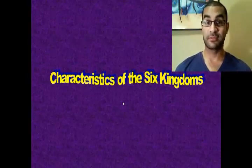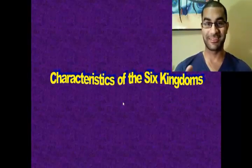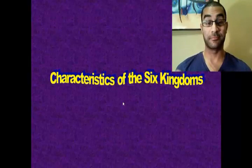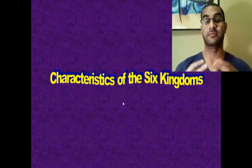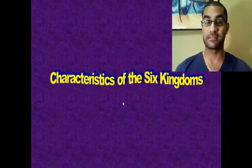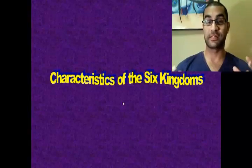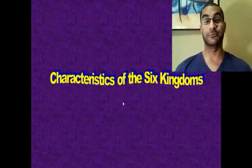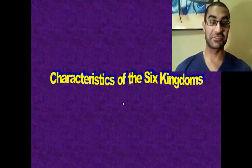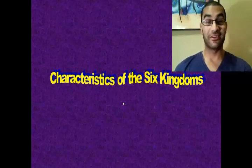We've counted on taxonomists and scientists involved in classification over the last few hundred years to do it for us. It started out really simple — basically everything was grouped into plants and animals. Then little by little, as new discoveries were made and new microorganisms were being found, the invention of the microscope really opened everyone's eyes to all kinds of life they never knew existed. New organisms and new groups of classification started being developed until we came up with the six kingdoms we have today.